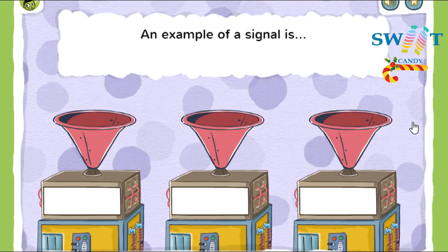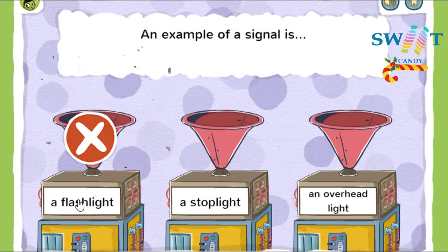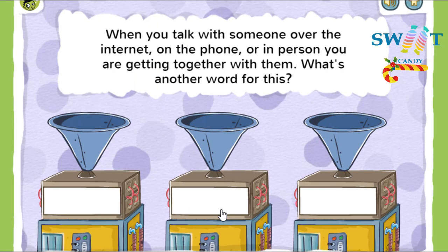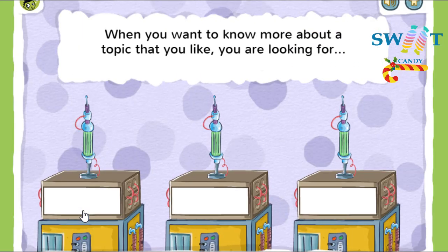An example of a signal is a stoplight — not a flashlight or an overhead light. A signal is something that tells you what to do, gives directions, a warning, or other information. When you talk with someone over the internet, on the phone, or in person, you're getting together with them. What's another word for this? Connect! When you connect with someone, you talk or meet with them to tell them something.